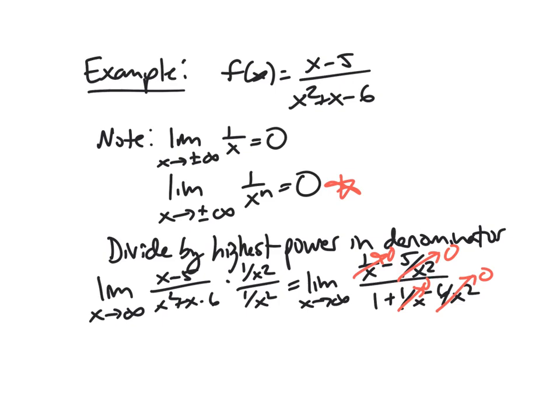All of those are some constant over something getting really, really, really big. And so you simplify this down, and suddenly we just have the limit as x approaches infinity of 0 over 1, and that's just 0.